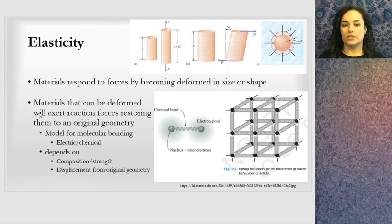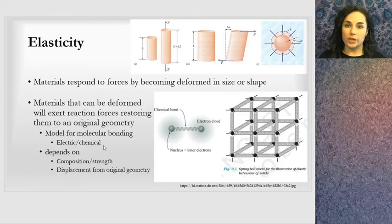Materials that can be deformed will exert reaction forces, restoring them to their original geometry. When we look at chemical or electrical bonding between materials, we see that it can be modeled with a spring between them. The chemical bond is modeled as a spring.